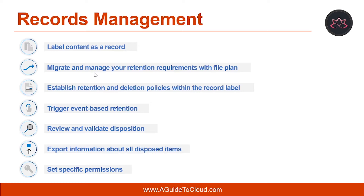The second capability is migrate and manage your retention requirements with a file plan. By using a file plan, you can bring in an existing retention plan to Microsoft 365 or build a new one for enhanced management capabilities. The third capability is to establish retention and deletion policies within the record label, where you can define retention and disposition periods based on various factors including the date last modified or created.